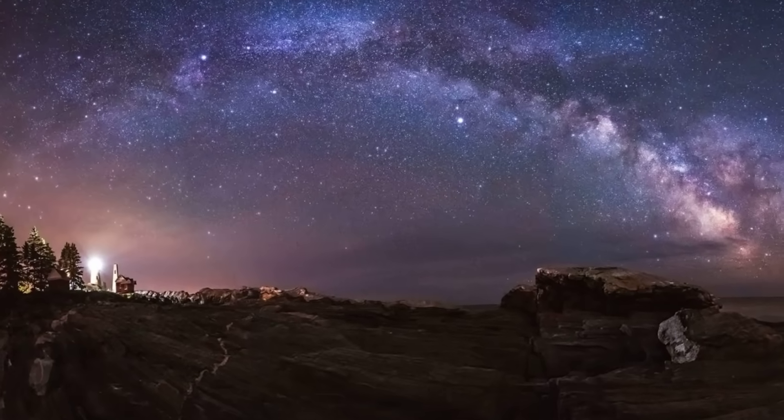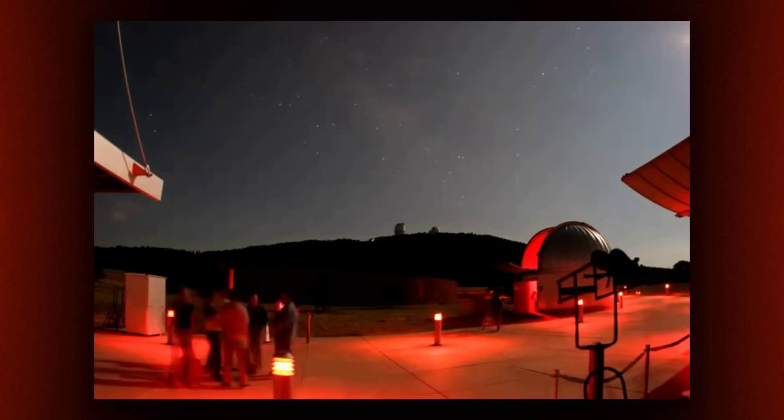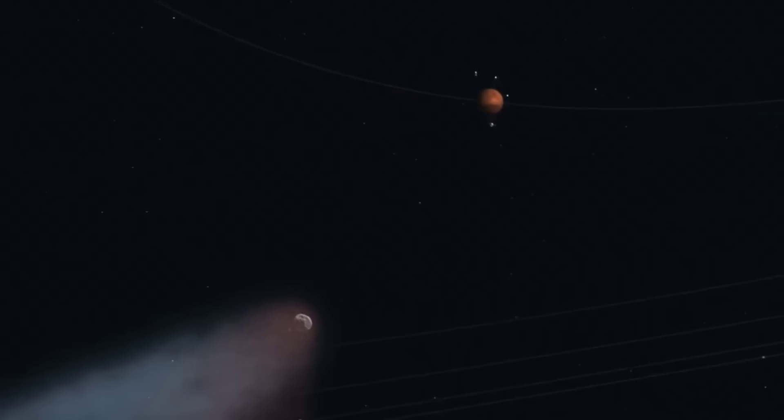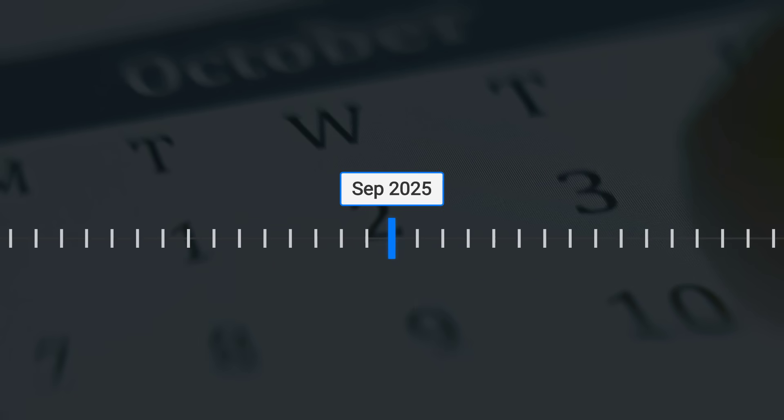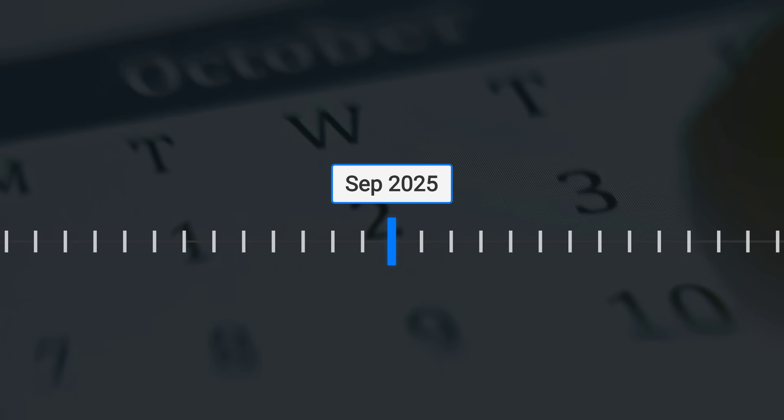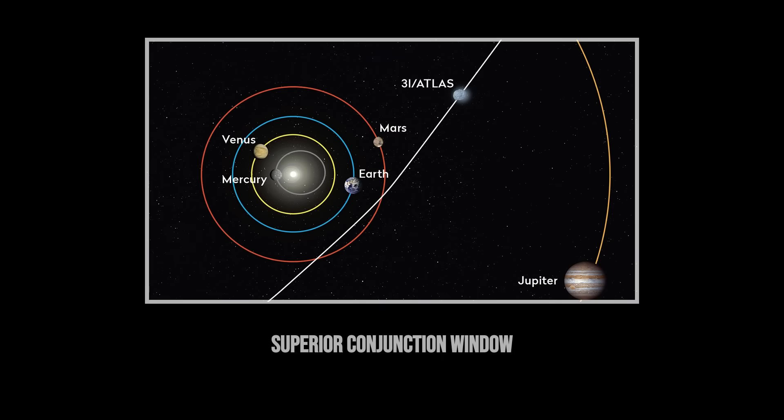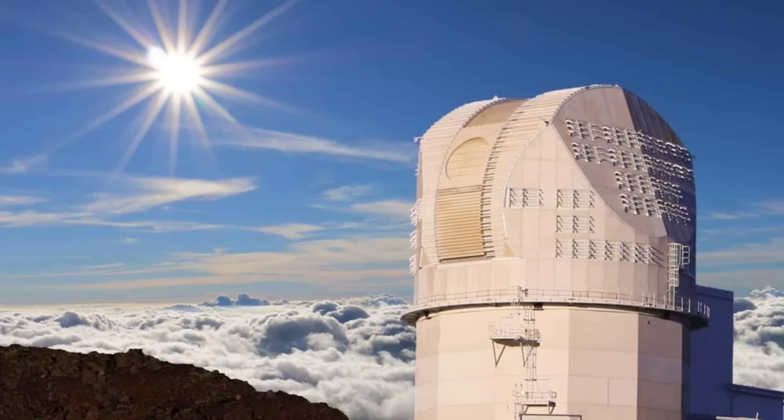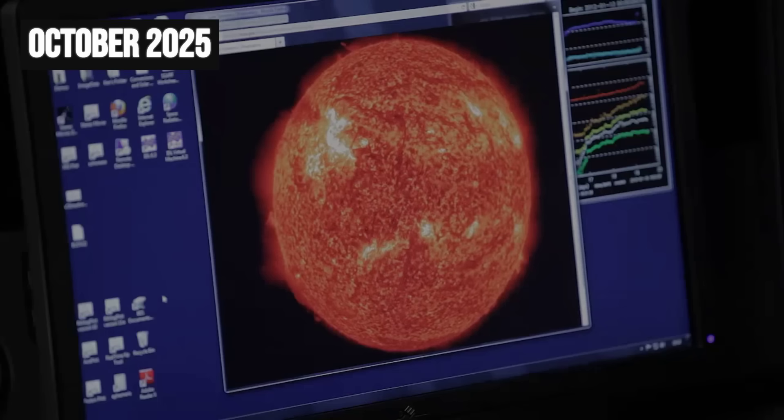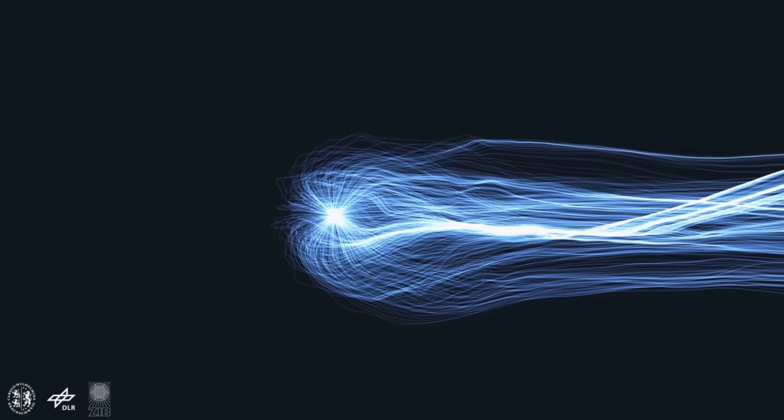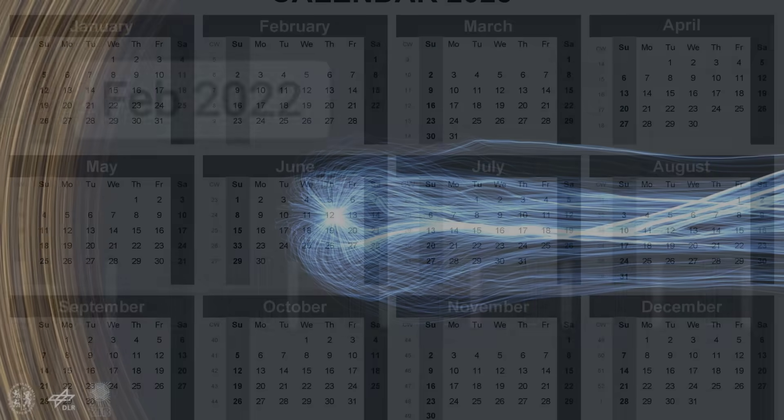October brings a lineup of cosmic milestones that has both scientists and the public on edge. On the first, 3I-Atlas sweeps past Mars, close enough for mission planners to scramble for last-minute observation slots, hoping to catch any signs of outgassing or tail changes. Just three weeks later, from October 21st to 23rd, the object passes into superior conjunction. For a brief window, it lines up almost perfectly with the sun, as seen from Earth, buried deep in the glare. This is the moment when solar physicists and comet watchers alike are glued to SOHO and stereo feeds, watching for any hint of a tail disconnection or plasma flare-up as the comet threads through the sun's magnetic fields.